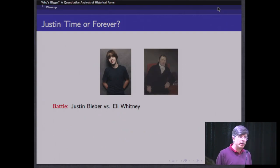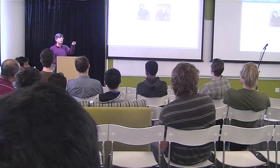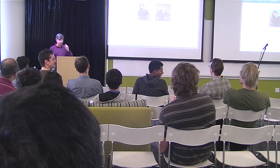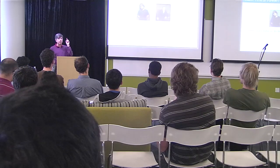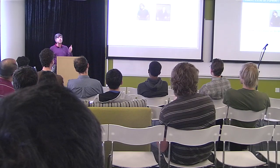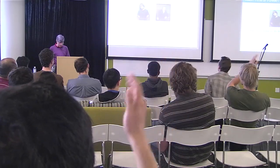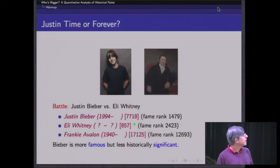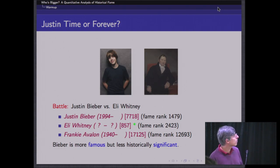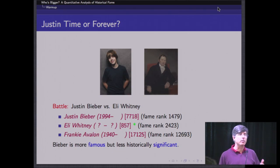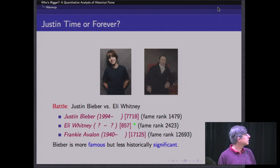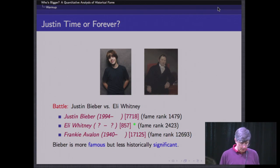Who's bigger: Eli Whitney or Justin Bieber? Eli Whitney was the inventor of the cotton gin, a pioneering thing for the Industrial Revolution. If we rank them according to our historical significance measure, Eli Whitney scores substantially more important than Justin Bieber. Justin Bieber falls in the same equivalence class as Frankie Avalon — a teenage idol popular at their time. But by contemporary fame, certainly more people walking around the streets have probably heard of Justin Bieber than Eli Whitney, and we can get that kind of measure too.